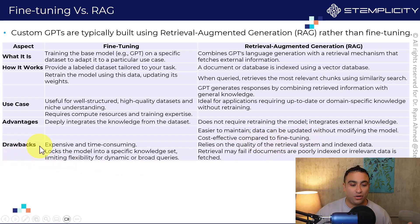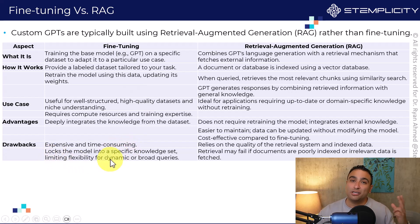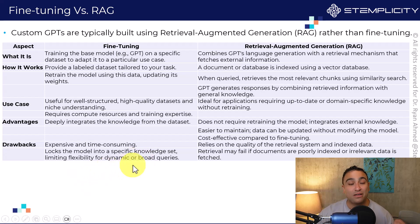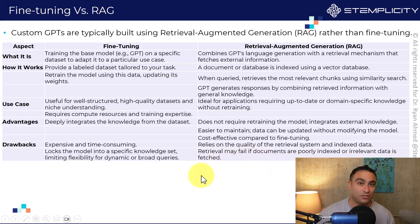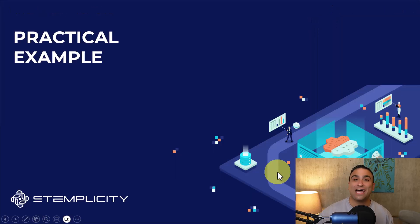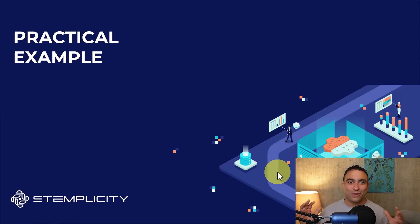When it comes to drawbacks: fine-tuning is expensive, time-consuming, and locks the model into a specific knowledge set, limiting flexibility for dynamic or broad queries. For RAG, it relies on the quality of the retrieval system and indexed data — retrieval may fail if documents are poorly indexed or irrelevant data is fetched. That's it for this lecture. In the next lecture, we'll have a practical real-world use case performing competitor analysis. Best of luck, and see you in the next lecture.